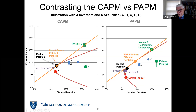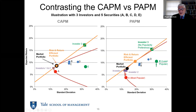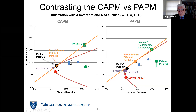Ultimately we still get an equilibrium and a market portfolio, but the market portfolio is no longer the tangency portfolio. Only investor three buys the tangency portfolio because investor three doesn't have those extra preferences. Investors one and two are buying more of A and B even though they're having lower expected returns. Investor three loads up on E — and may even short A and B. So now we have a model that can include as many preferences as you like.